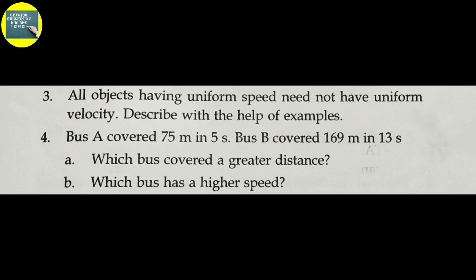Example: The needle of a clock moves with uniform speed — it covers equal distances in equal time intervals. However, since its direction continuously changes, it does not have uniform velocity. This is an example of motion with uniform speed but non-uniform velocity.